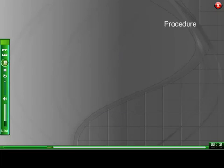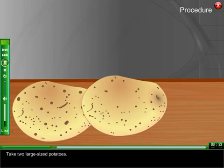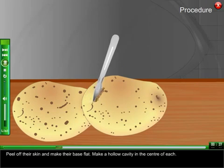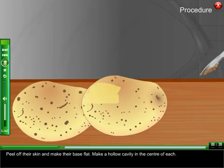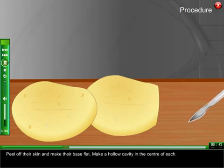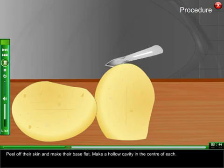Procedure. Take two large sized potatoes. Peel off their skin and make their base flat. Make a hollow cavity in the center of each.